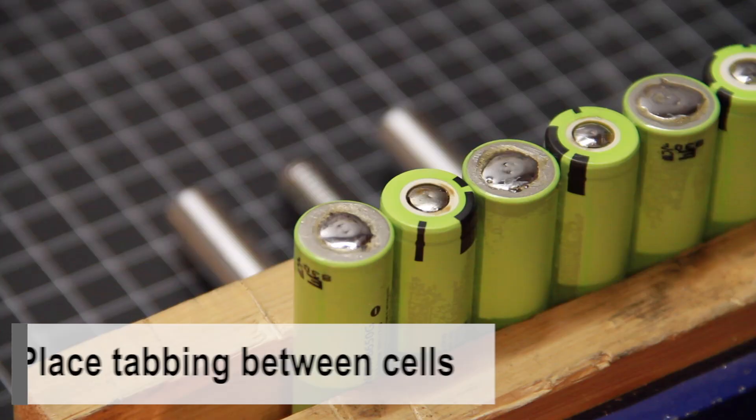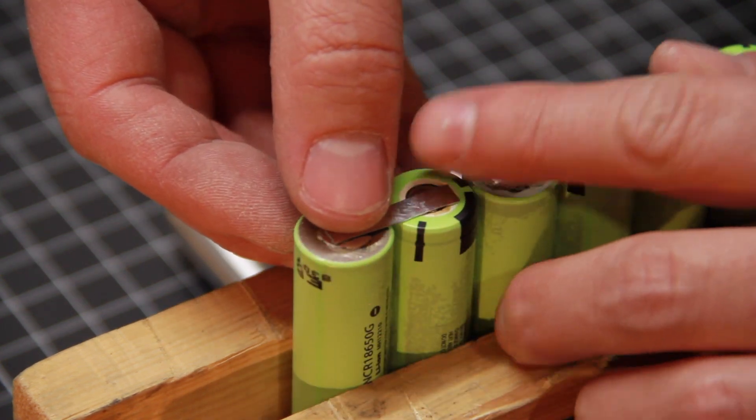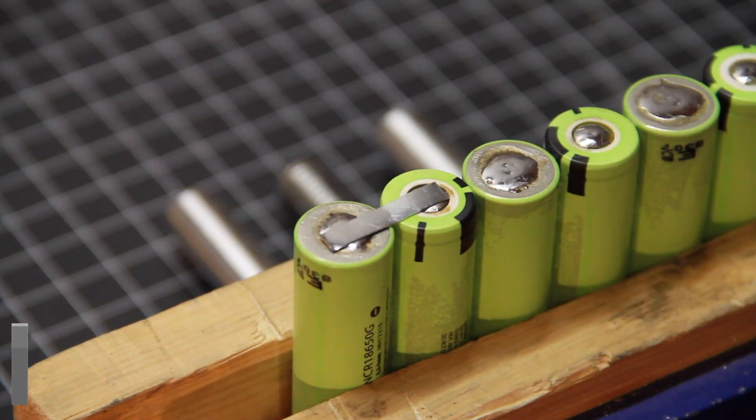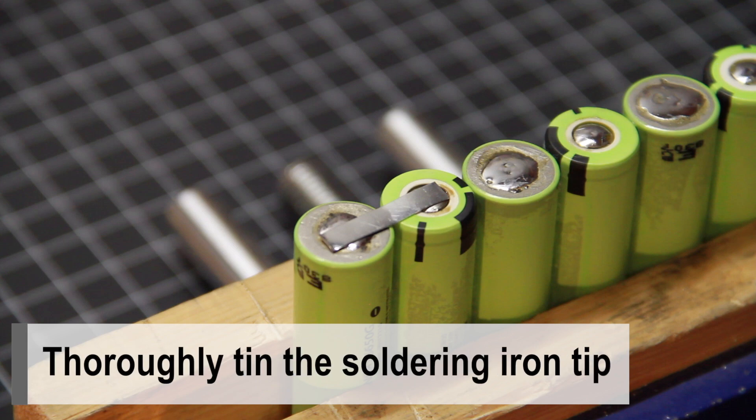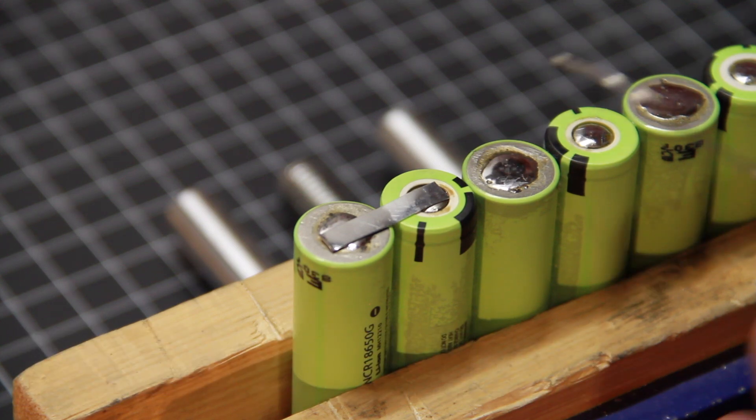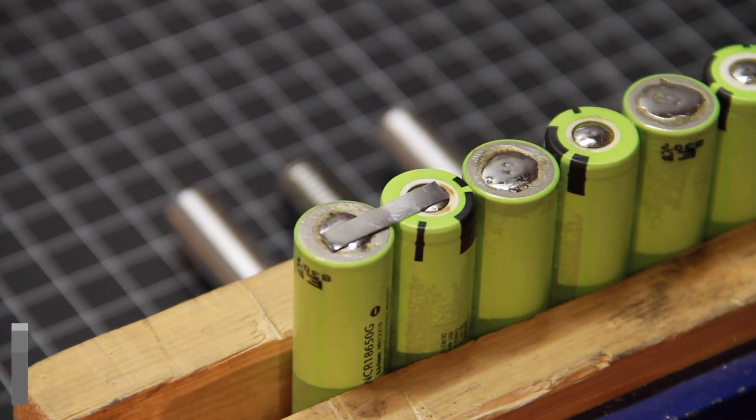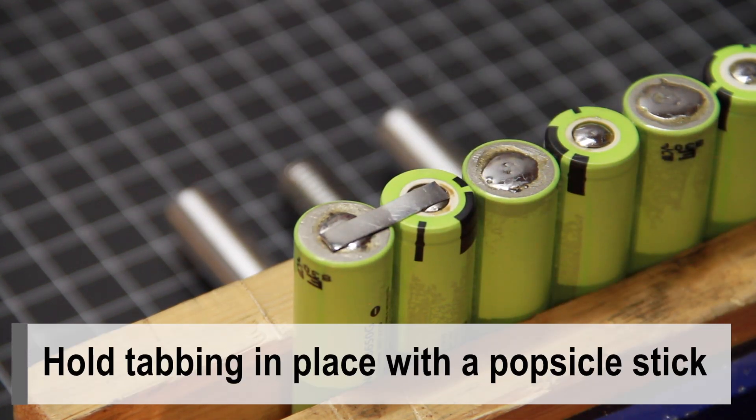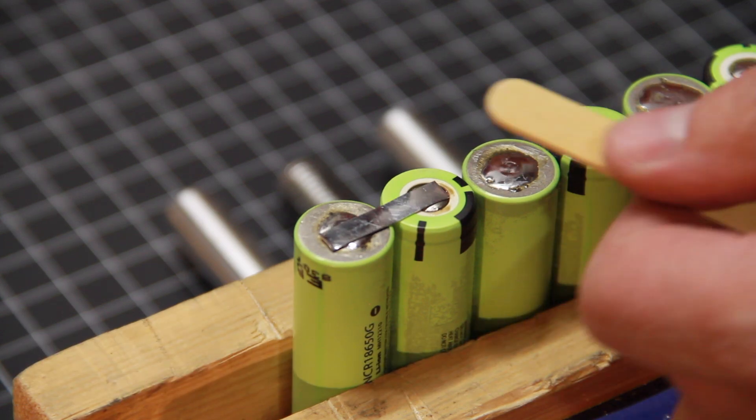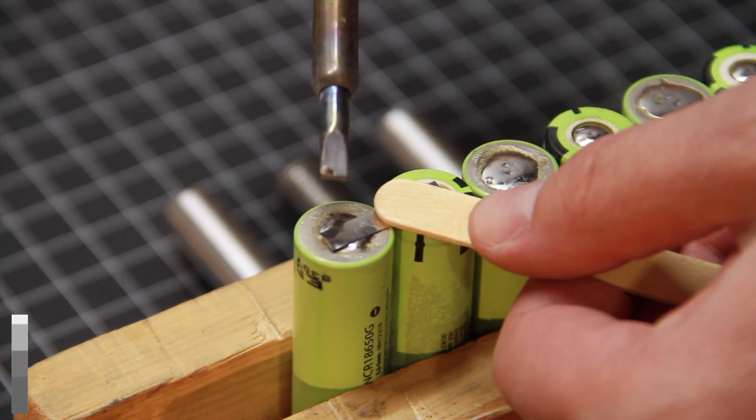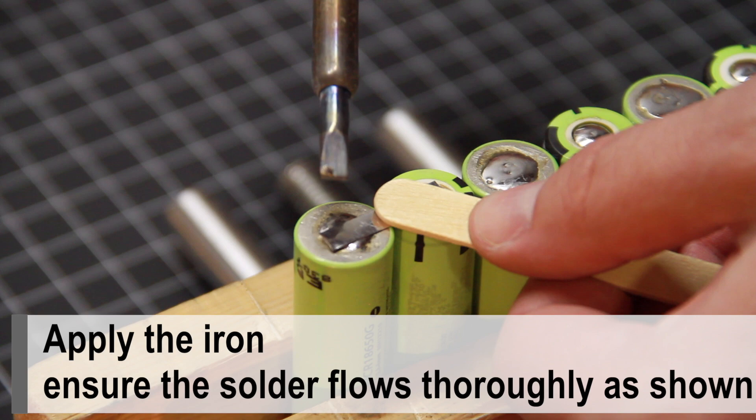Remember, go positive to negative if your battery is going to be arranged in series. Thoroughly tin the soldering iron tip. Hold tabbing in place with the popsicle stick. Apply the iron. Ensure the solder flows thoroughly as shown.